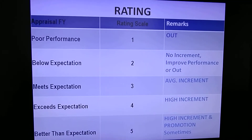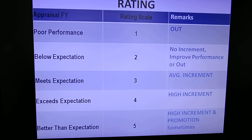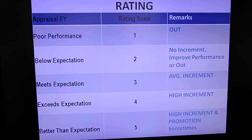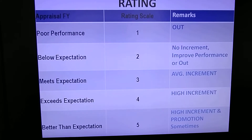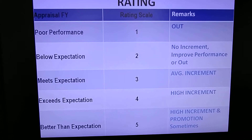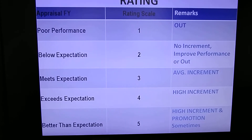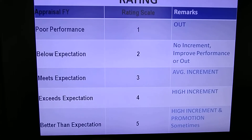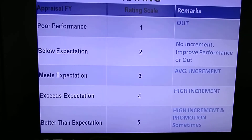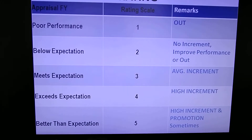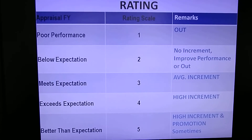This slide covers the rating system used in appraisal. Ratings range from one to five: one is poor performance, two is below expectations of the management or HOD, three is meets expectations, four is exceeds expectation — better than what the HOD or management expected — and five means you are performing very well in the organization.